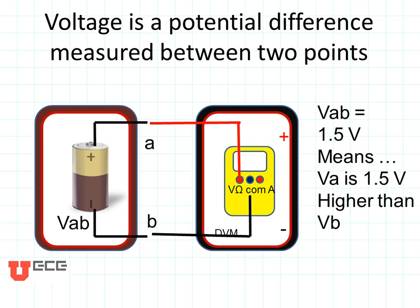Voltage is a potential difference that's measured between two points. You can see the voltmeter here, where we've connected the positive red lead onto A and the common or negative ground lead onto B. V from point A to point B, or VAB, is equal to 1.5 volts. That means that VA is 1.5 volts higher than VB.